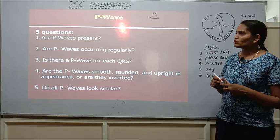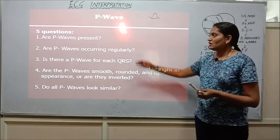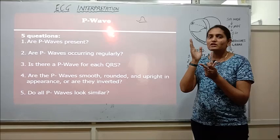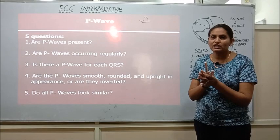So there are basically five questions which we need to answer while seeing the P wave on the ECG. First question says are the P waves present and if they are present that means SA node is functional and if the P waves are not there or if they are replaced by some other malformed waves then that means there is some abnormality in the conduction by the SA node.